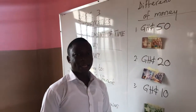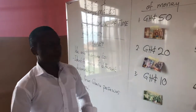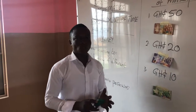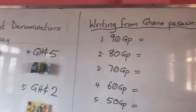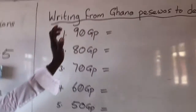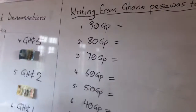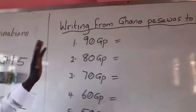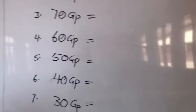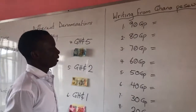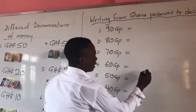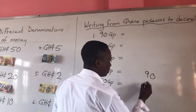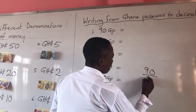Let's quickly move on to the second activity for the day. We are saying that we will be writing from Ghana pesewas to decimal. How can we write that? Let's quickly look at some examples. We have 90 pesewas - 90 Ghana pesewas. For us to write 90 Ghana pesewas in decimal, we write 90 over 100.